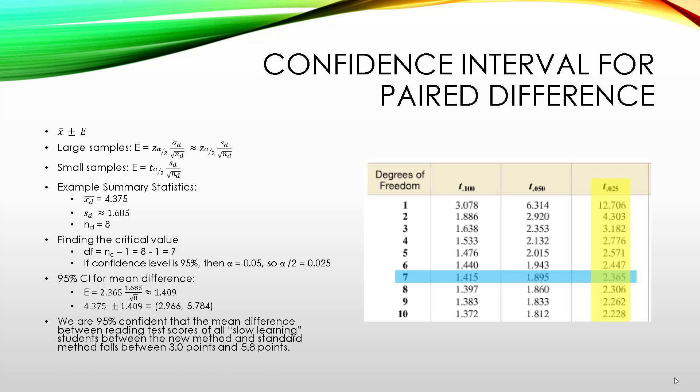Which means we are 95% confident that the mean difference between reading test scores for all slow learning students, between the new method and the standard method, falls between 3 points and 5.8 points.